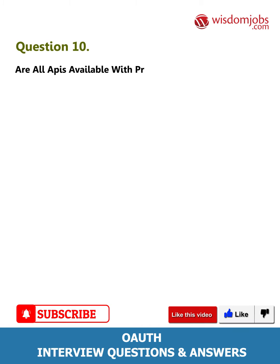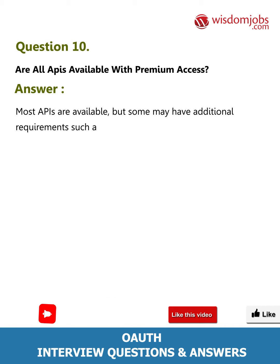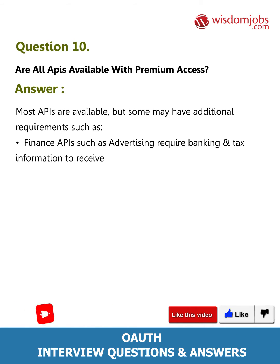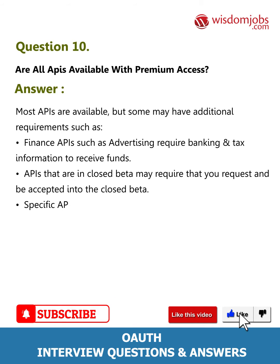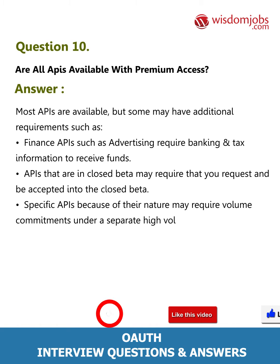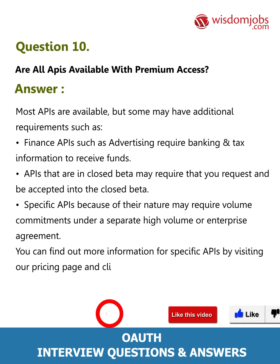Question 10: Are all APIs available with premium access? Answer: Most APIs are available, but some may have additional requirements. Finance APIs such as advertising require banking and tax information to receive funds. APIs that are in closed beta may require that you request and be accepted into the closed beta. Specific APIs, because of their nature, may require volume commitments under a separate high-volume or enterprise agreement. You can find out more information for specific APIs by visiting the pricing page and clicking on the API you are interested in.